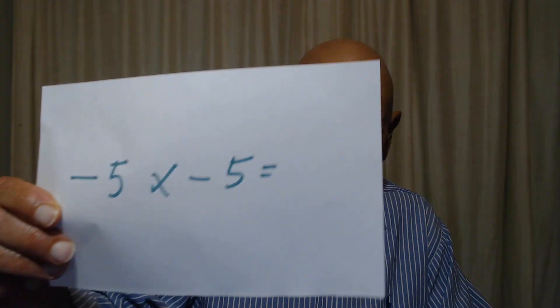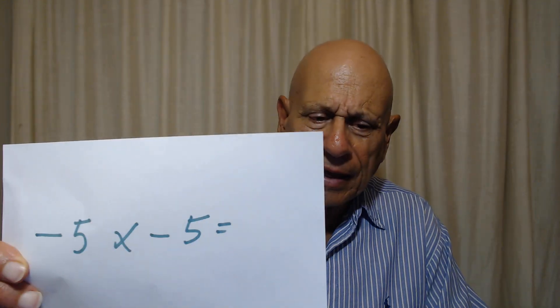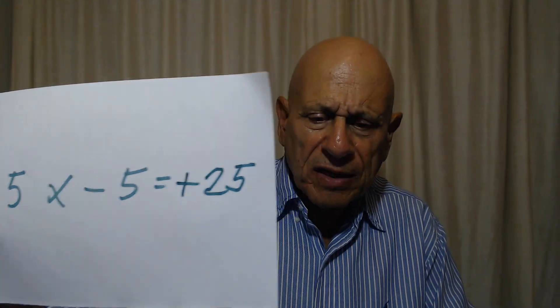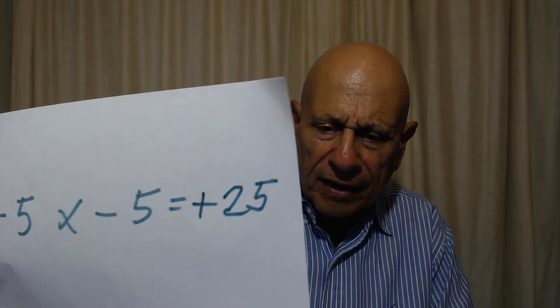I'm going to take math and relate it to your mental health — something I don't think anybody has done. Welcome to this unique video. So what is a negative number times a negative number? Simple example: negative 5 times negative 5 — it could be any negative number. What does that equal? Do you remember your signed numbers? Here's the answer: a negative number times a negative number is equal to a positive number — always and everywhere.